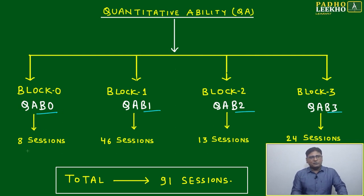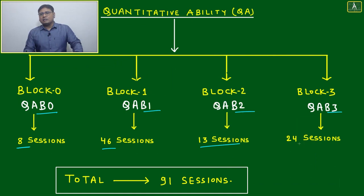Block 0 is fundamentals with total 8 sessions. Block 1 covers numbers, algebra part 1, and arithmetic part 1 with 46 sessions. Block 2 is totally dedicated to geometry and mensuration with 13 sessions. Block 3 covers algebra part 2, arithmetic part 2, modern math, and miscellaneous chapters with 24 sessions.